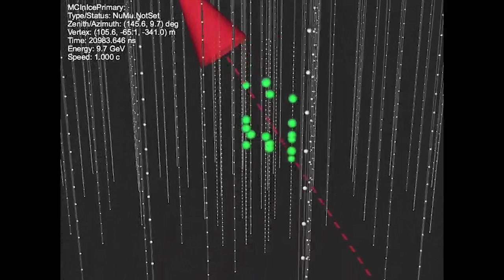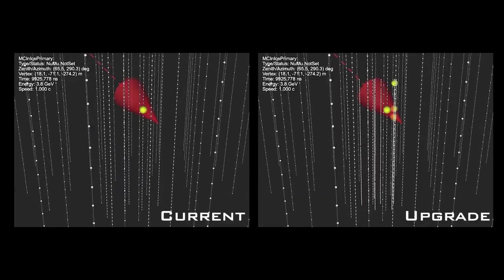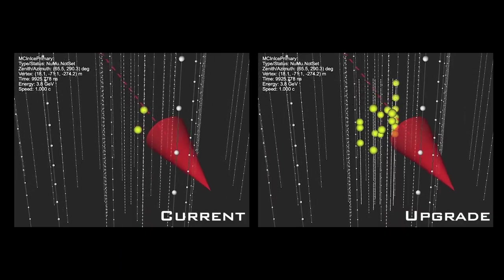The neutrino physics measurements that we make with IceCube are at the very ragged edge of what the detector can measure. With the upgrade we'll have much better calibration of the response of our detector, many more sensors, and we'll be able to collect more information about these lowest energy neutrinos.